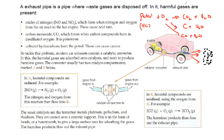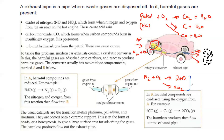Inside the car engine, the car takes in air to get oxygen for burning. The air contains nitrogen and oxygen. Due to the high temperature inside the engine, nitrogen and oxygen react with each other, forming oxides of nitrogen such as nitrogen monoxide or nitrogen dioxide. These are acidic oxides, so they can cause acid rain or photochemical smog.